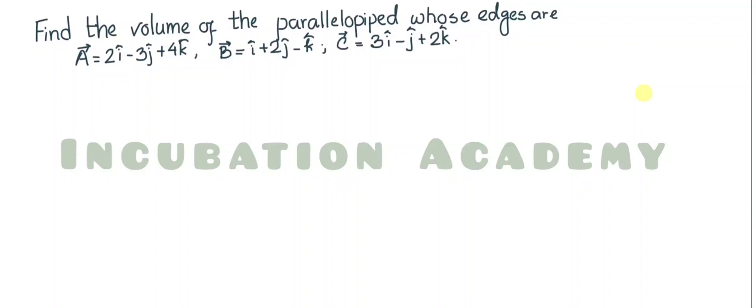Welcome everyone. The question displayed on the screen asks us to find the volume of the parallelepiped or cuboid whose edges are given by three vectors: a vector is 2i − 3j + 4k, b vector is i + 2j − k, and c vector is 3i − j + 2k.